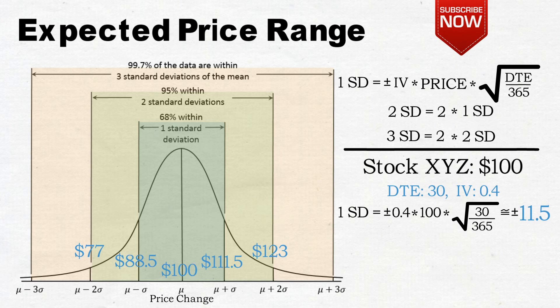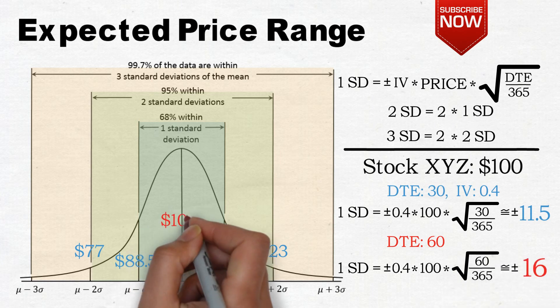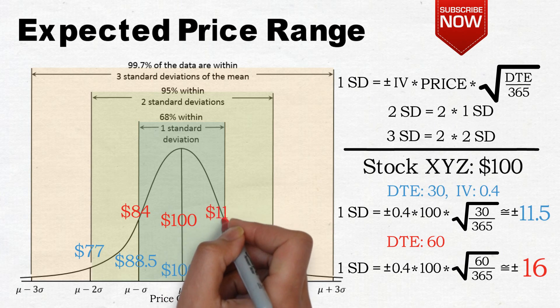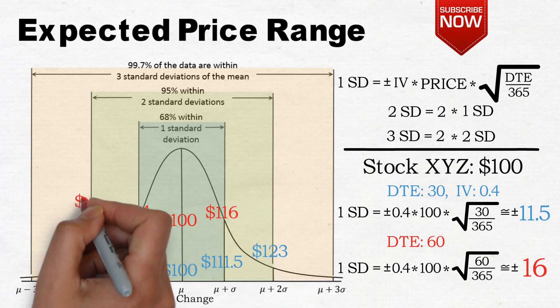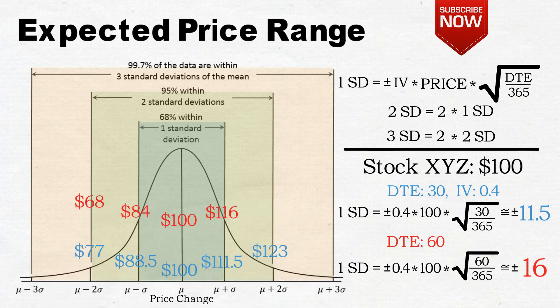Now let's take a look at the same stock with the same implied volatility but 60 days instead of 30 days till expiration. The one standard deviation range would now be about $84 to $116. The two standard deviation range would be $68 to $132.